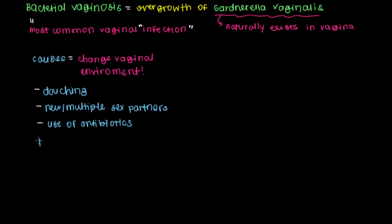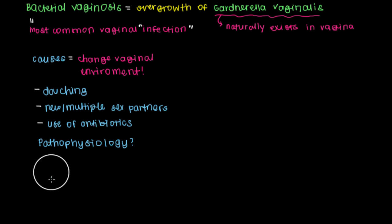When we talk about the pathophysiology of a disease, we're talking about the mechanism by which that disease occurs. To understand the pathophysiology of bacterial vaginosis, we need to look at a sample of bacteria that exist in the vagina. There are many different bacteria present, and if you look carefully, Gardnerella vaginalis is actually the vast minority of bacteria present in a normal sample of vaginal bacteria.